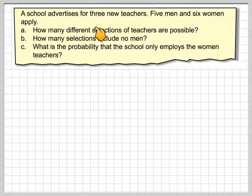A school advertises for three new teachers. Five men and six women apply. How many different selections of teachers are possible? How many selections include no men? And what is the probability that the school only employs the women teachers?